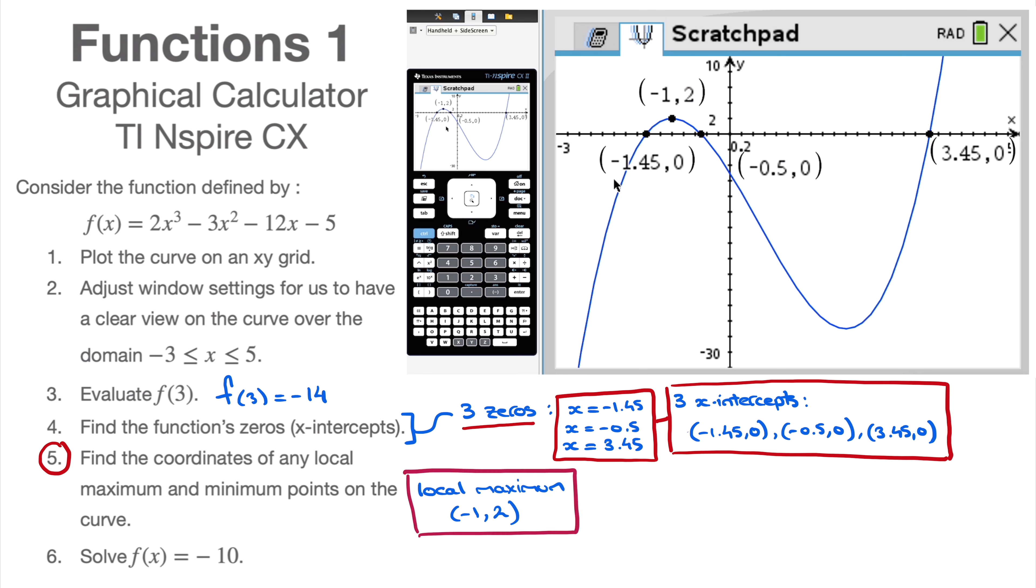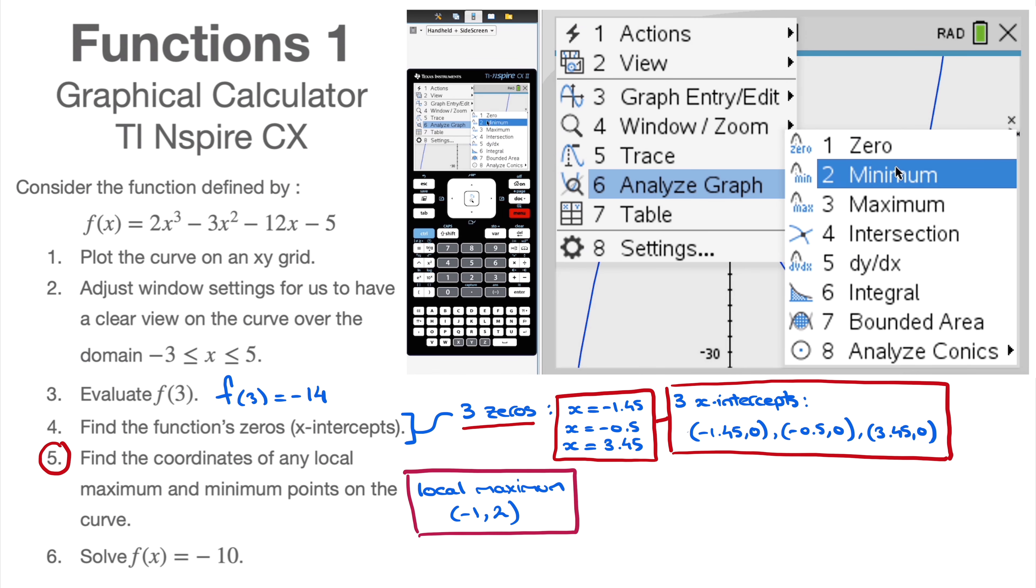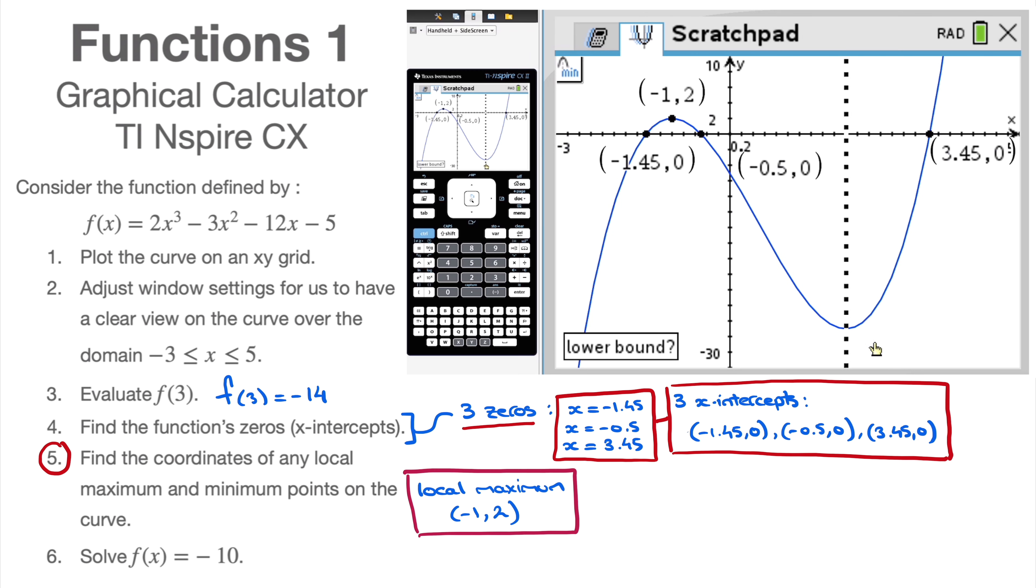For the minimum point, I do the same. Menu, Analyze Graph, and now I click on Minimum. The minimum is somewhere around here, so I go to the left of that point. I click. I go to the right of that point, and I click. And I now have the minimum point, which has coordinates 2, -25.